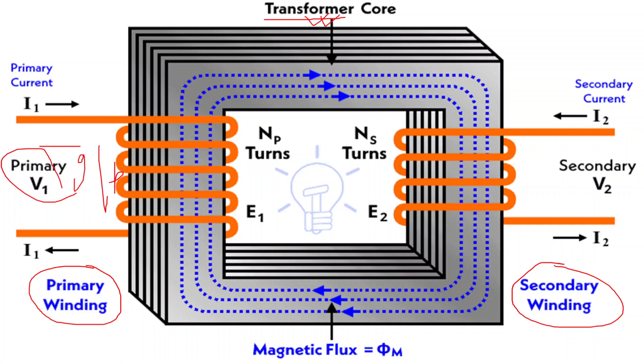Similarly, we have the core. The core of the transformer is typically made up of laminated iron or other magnetic materials. It provides a path for the magnetic flux generated by the primary coil to link with the secondary coil, facilitating efficient energy transfer.